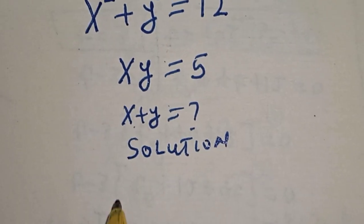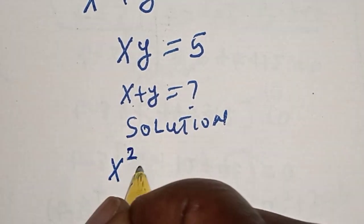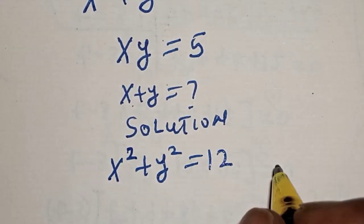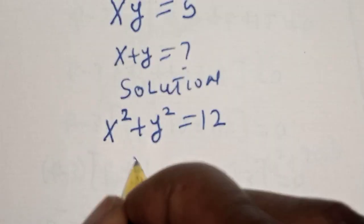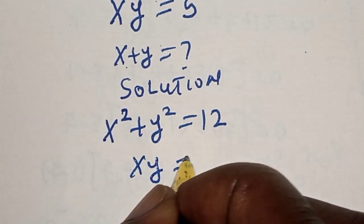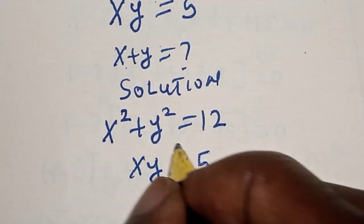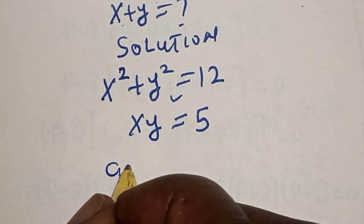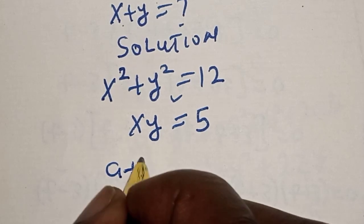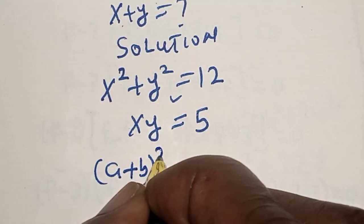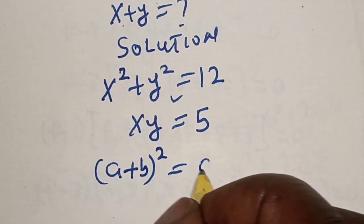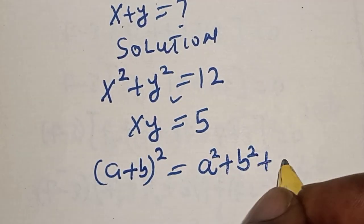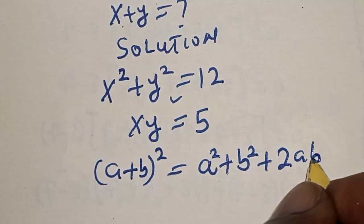The given equation is x squared plus y squared is equal to 12, then xy is equal to 5. From here, note that a plus b squared is equal to a squared plus b squared plus 2ab.